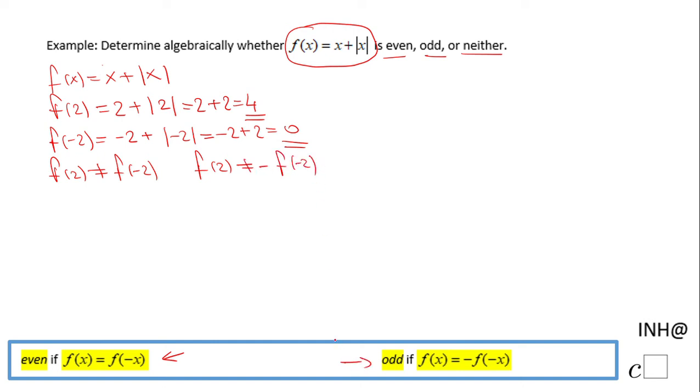We can tell that this function is neither even nor odd. Now let's use an algebraic approach, which says to evaluate the function at -x. So f(-x) = -x + |-x|.